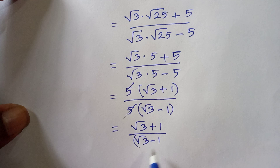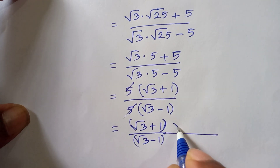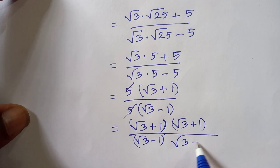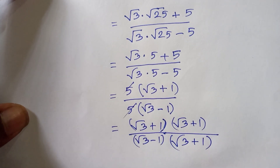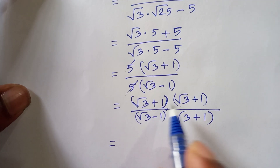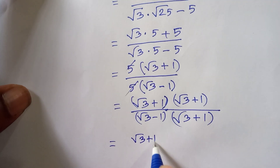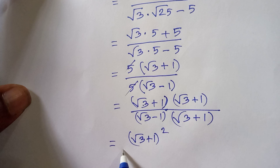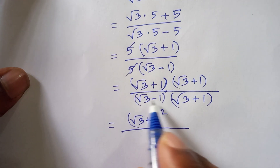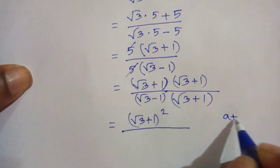Now we multiply both the numerator and denominator by (root 3 plus 1). The numerator becomes (root 3 plus 1) times (root 3 plus 1), which can be written as (root 3 plus 1) whole to the power 2.